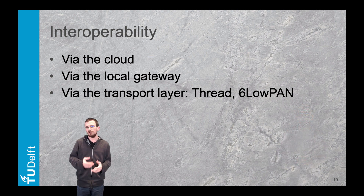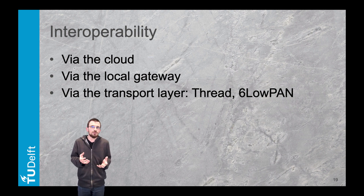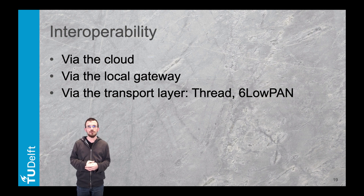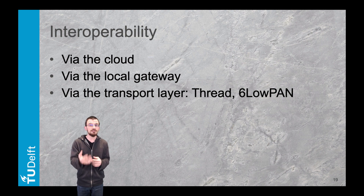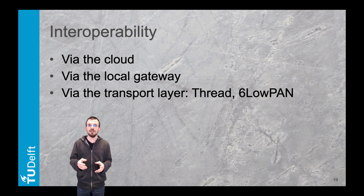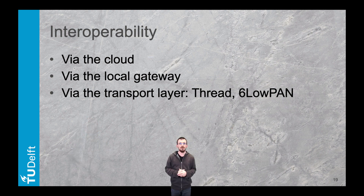Locally, another solution is the multi-protocol gateway. A gateway translates from one protocol to another — we've mentioned translation into the internet protocol, but some gateways also have the ability to translate into other protocols, bridging the gap locally. Finally, some network technologies can be bridged at the transport layer, building on the four internet layers introduced in the previous module.